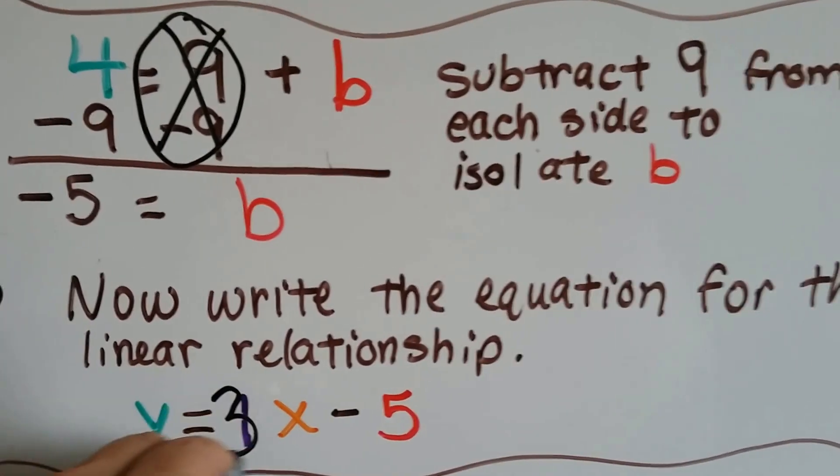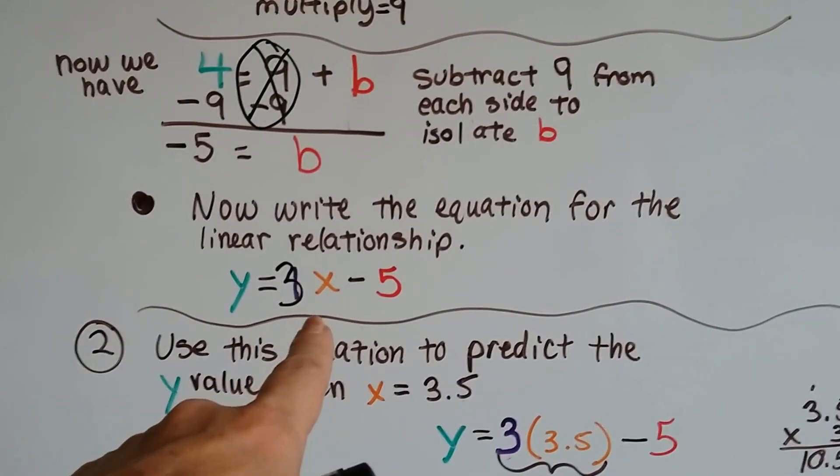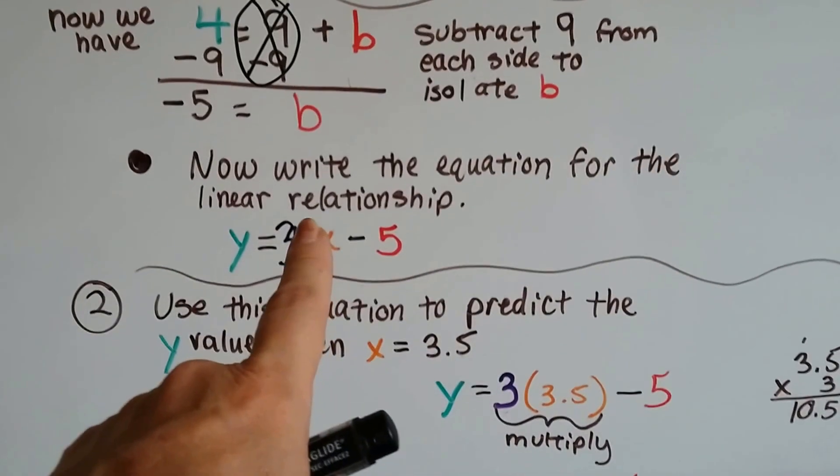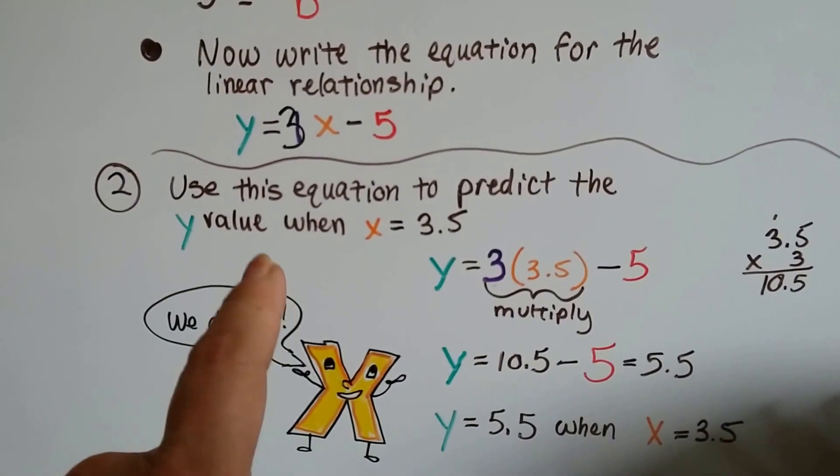This is a 3. So our slope is 3. Then we've got an x and a minus 5. And we're going to use this equation to predict that value, that y value, when x equals 3.5.